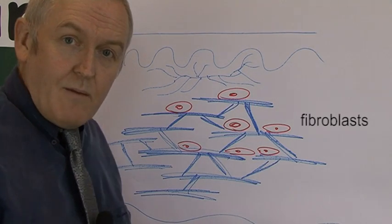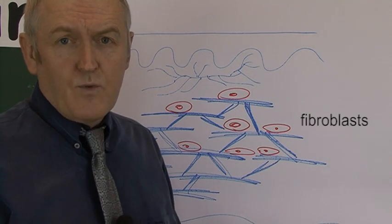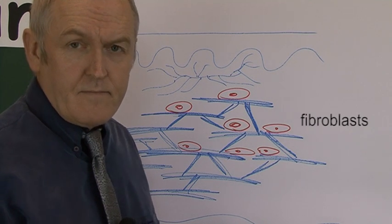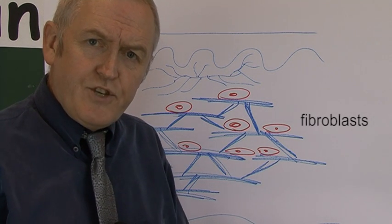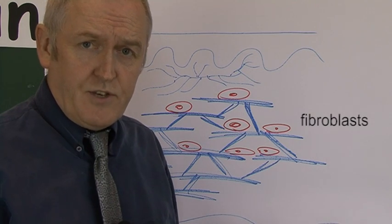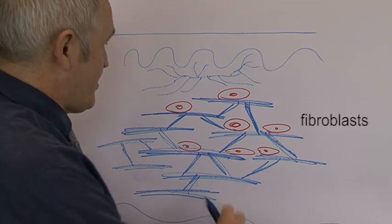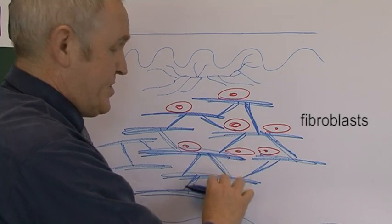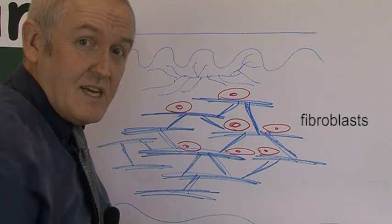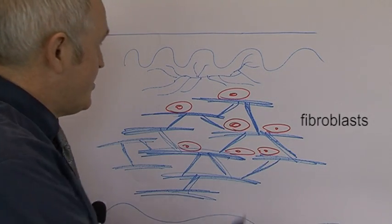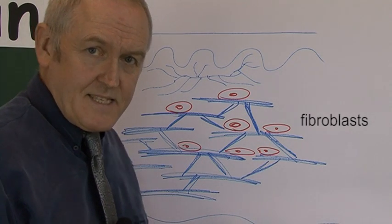And you might remember that a blast cell is a cell which produces something. So fibroblasts are producing fibrous tissue, because we said this is a moderately dense connective tissue, but it contains these fibers—it's a fibrous tissue produced by the fibroblasts.